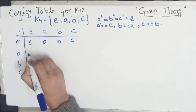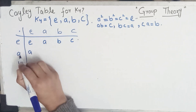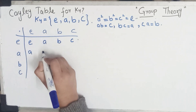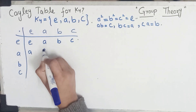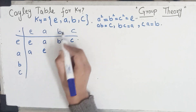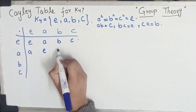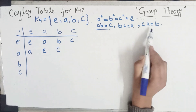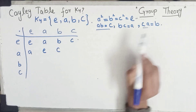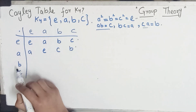Similarly, a ko e se karaate hain toh a aa jaega. Then a² = e. Uske baad a·b = c. Yahan par a·c — a·c barabar kiska hai? c·a = b, so direct mein b likh rahe hain.